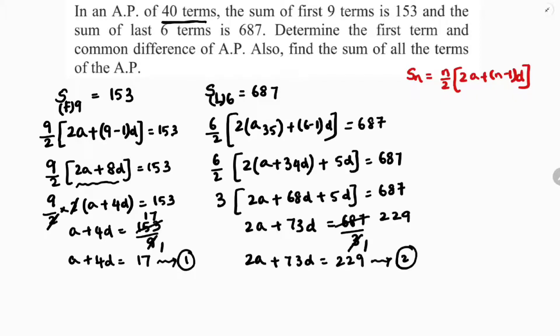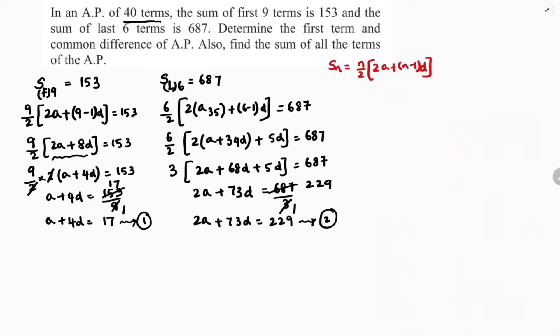Now I will solve these two. We need to find first term, common difference, and sum of 40 terms. From here I will take the value of A. A is 17 minus 4D. I will substitute over here. 2 into 17 minus 4D plus 73D is 229. 2 times 17, 34, 2 times 4 is 8. Plus 73D. 8D plus 73D is 229. 73 minus 8 is 65, so 65D equals 229 minus 34 if I transpose.